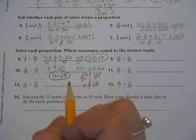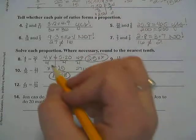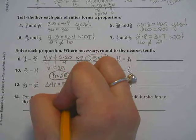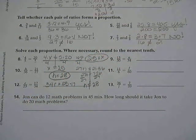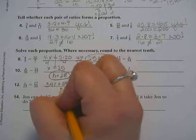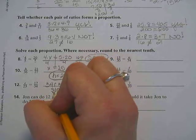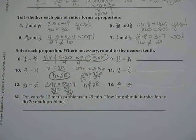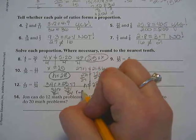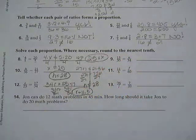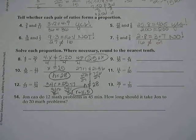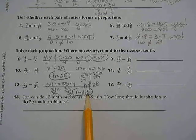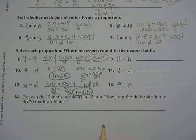Alright, number 12. 34 times R equals 23 times 17. 23 times 17 is 391. Divide by 34. R is 11.5. Yep, and this already is to the nearest tenth. Yep, that's okay.